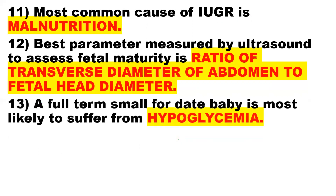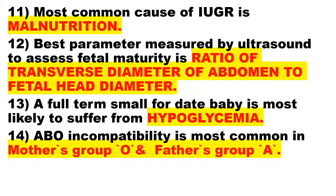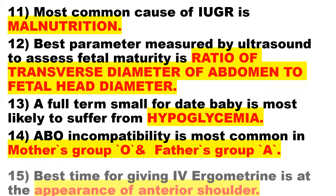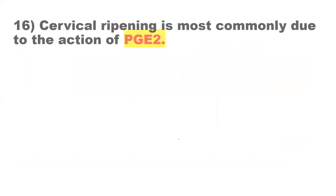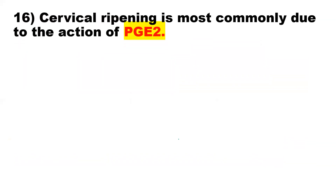Point 13: Full-term small-for-dates babies are most likely to suffer from hypoglycemia. Point 14: ABO incompatibility is most common in mothers with group O and fathers with group A. Point 15: The best time for giving intravenous ergometrine is at the appearance of the anterior shoulder. Point 16: Cervical ripening is most commonly due to exogenous prostaglandin E2.